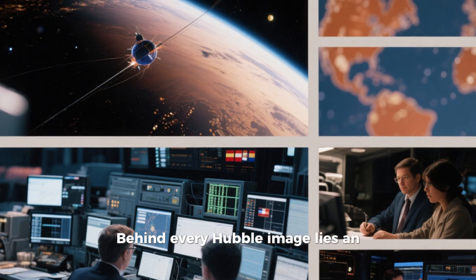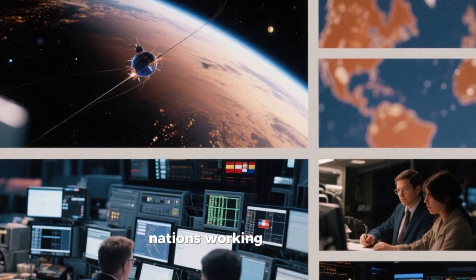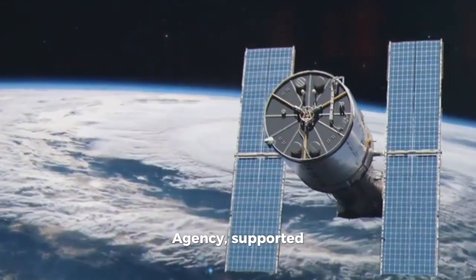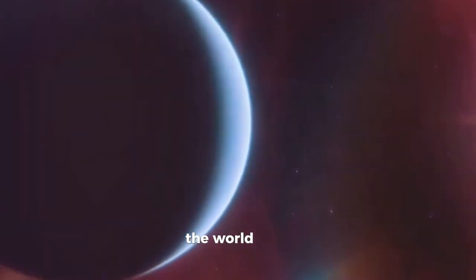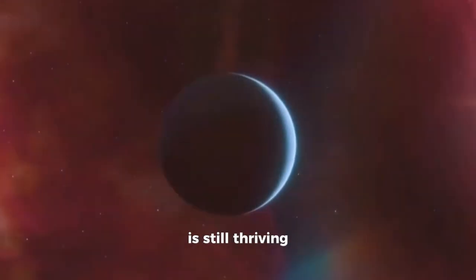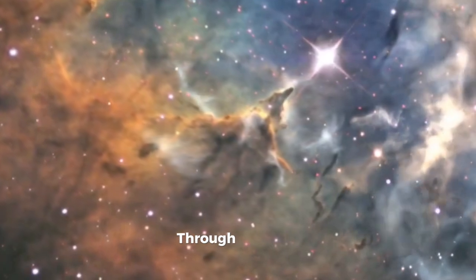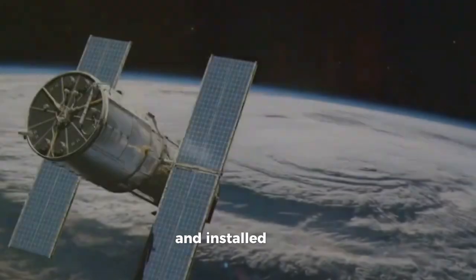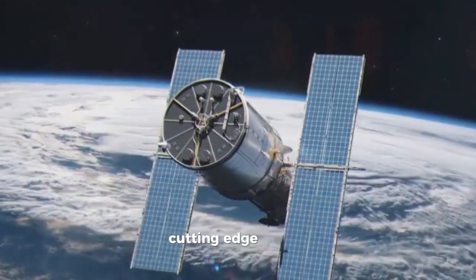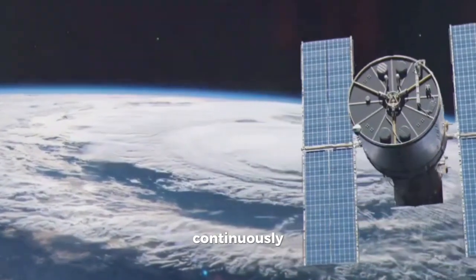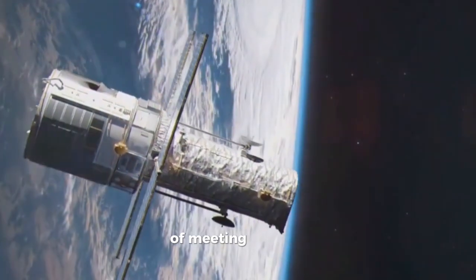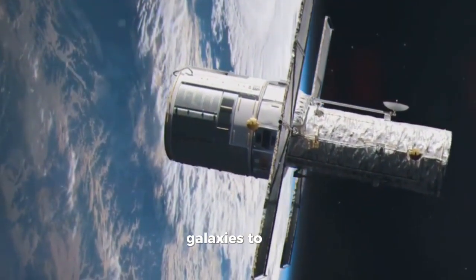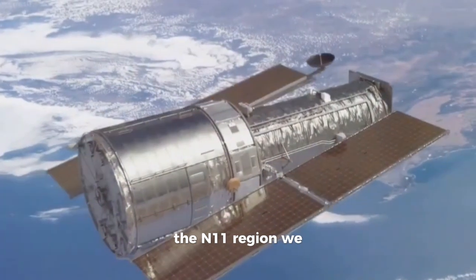Behind every Hubble image lies an extraordinary network of people and nations working together. The telescope is a joint mission between NASA and the European Space Agency, supported by scientists and engineers across the world. This collaboration is the reason Hubble is still thriving decades beyond its original lifetime. Through multiple servicing missions, astronauts replaced instruments, upgraded hardware, and installed new detectors that keep Hubble at the cutting edge. Those efforts transformed what could have been a retired relic into a continuously evolving observatory capable of meeting modern scientific goals. Each upgrade extended its reach, from the faintest galaxies to the intricate detail of the N11 region we see today.